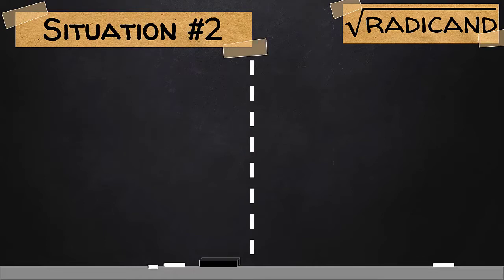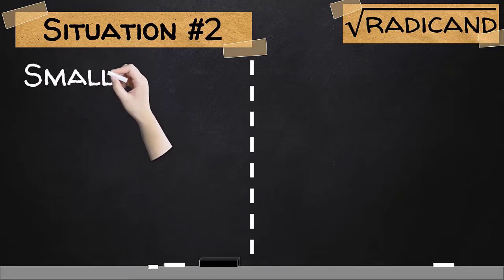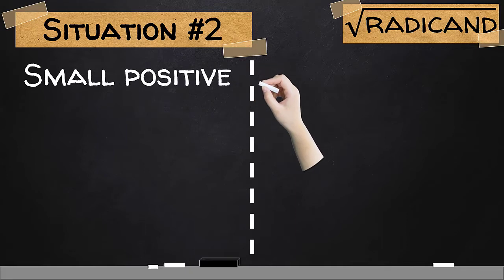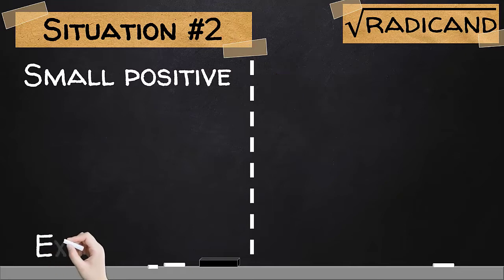Situation number 2. Let us consider another 2 examples here. Let us start with this example where the radicand is considered to be a small positive number. Let us make this as our example number 3.